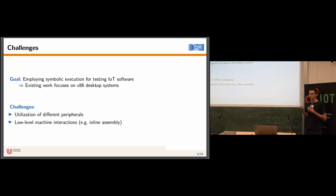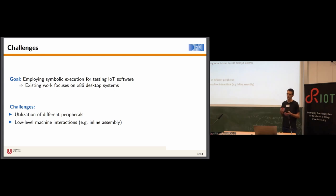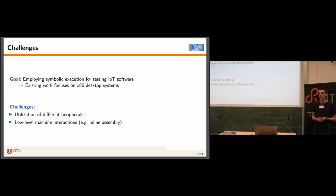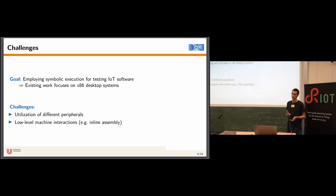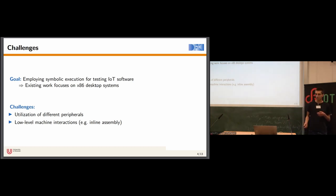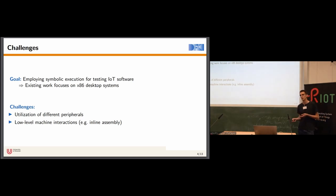When applying symbolic execution in the IoT domain, there are several challenges. The majority of existing work focuses on x86 desktop systems. One major difference between the conventional desktop domain and the low-level embedded IoT domain is that embedded software often uses a variety of different peripherals and interacts with them at a very low abstraction level. Furthermore, embedded software depends much more on low-level machine details — for example, inline assembly is something you encounter very often in embedded software.